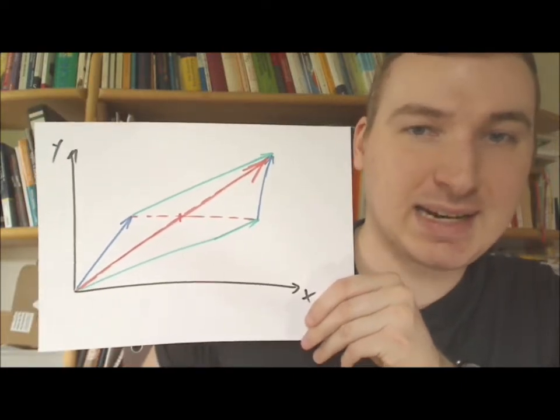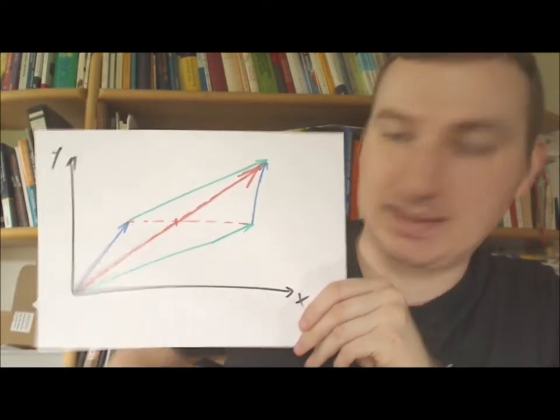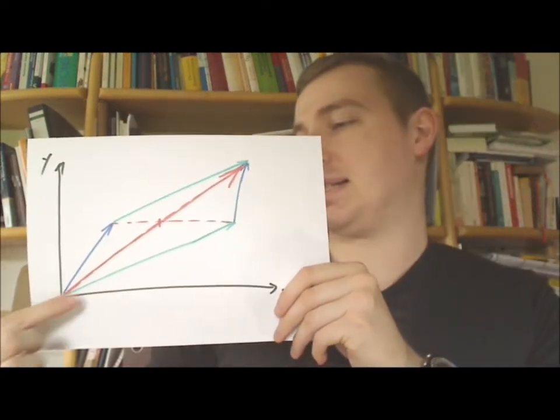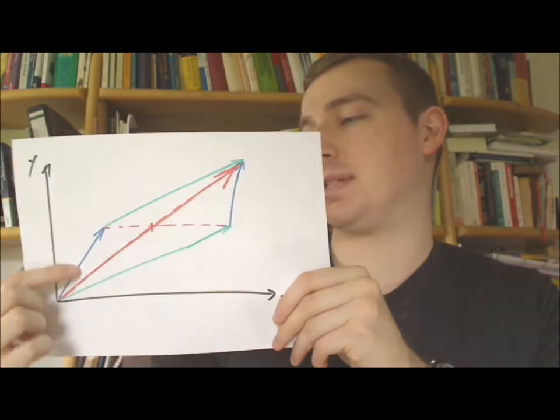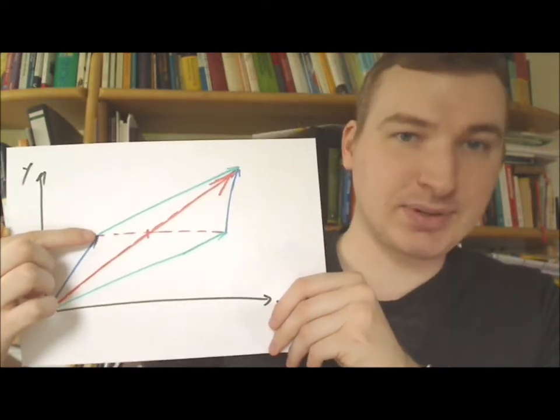And therefore I have a picture for you that shows the principle how it works. So we have x-axis, y-axis, and can you see it? We have a green vector and a blue vector. This is the green vector, this is the blue vector.